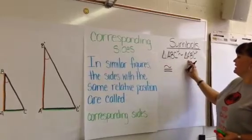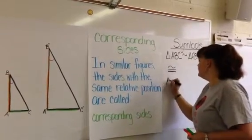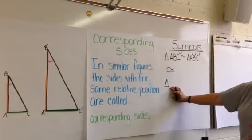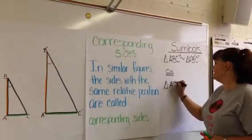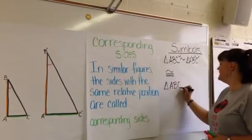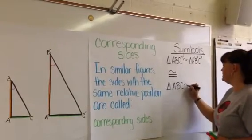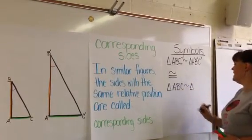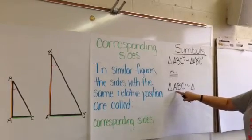When you are talking about triangles, you need to be sure that the order that you put the vertices in is very important. So, if we are talking about triangle ABC, and we want to say it is similar to triangle, you need to make sure that the corresponding parts match up.